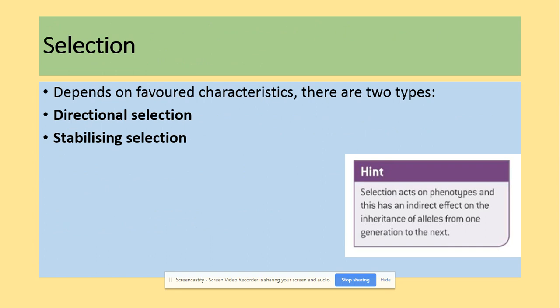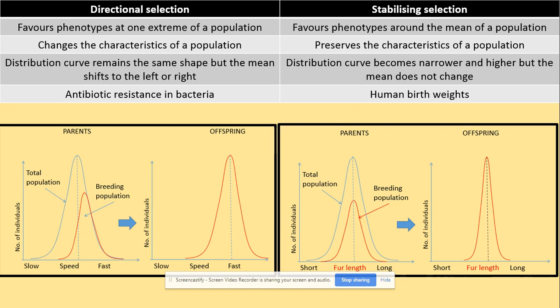So what are the types of selection? We have two of those — directional and stabilizing — and that depends on which characteristics are selected. Directional selection selects one of the extreme characteristics. As you can see here, the blue one is the population at the beginning, and as they breed they keep selecting one of the extreme characteristics.